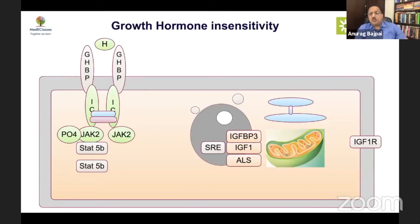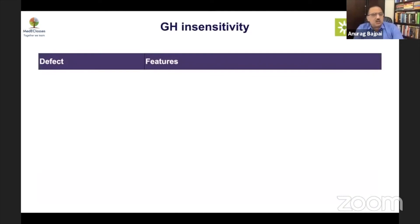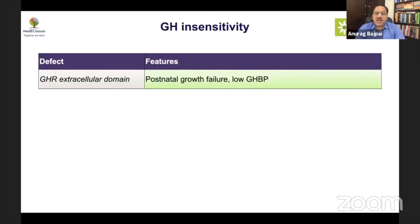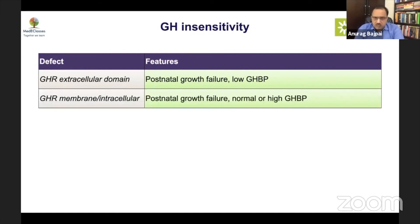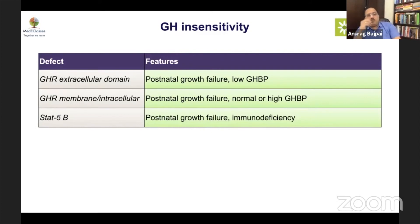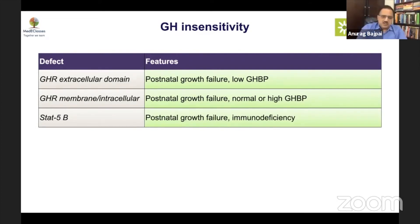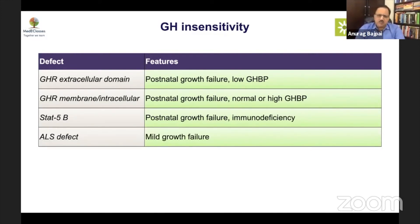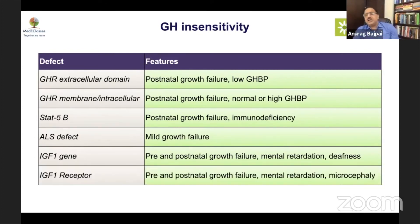Growth hormone insensitivity can result from problems in the extracellular domain, intracellular domain, STAT pathway, IGF-1 gene, or IGF-1 receptors. The extracellular domain defect is conventionally known as Laron syndrome, associated with severe growth failure and low growth hormone binding protein. Intracellular membrane defects cause postnatal growth failure with normal GHBP. STAT5B defect causes milder defect with immunodeficiency. ALS defects are very mild and often not detected. IGF-1 gene defects are important — above the IGF-1 gene, birth size is normal, but with IGF-1 gene or IGF-1 receptor defects, there is both prenatal and postnatal growth failure, which is extremely important to identify.